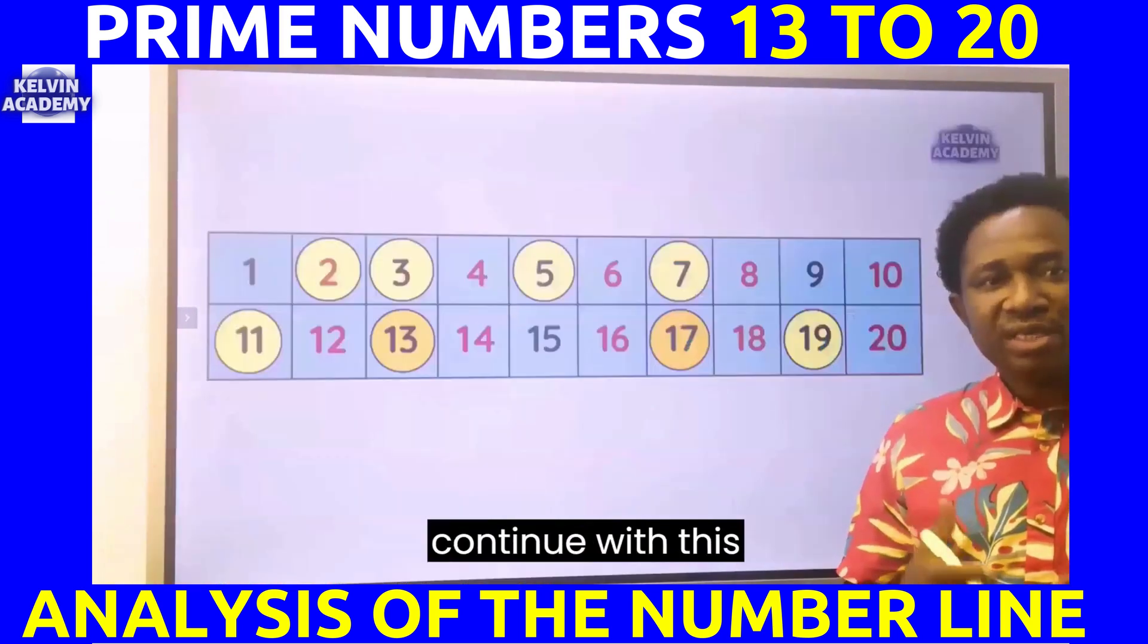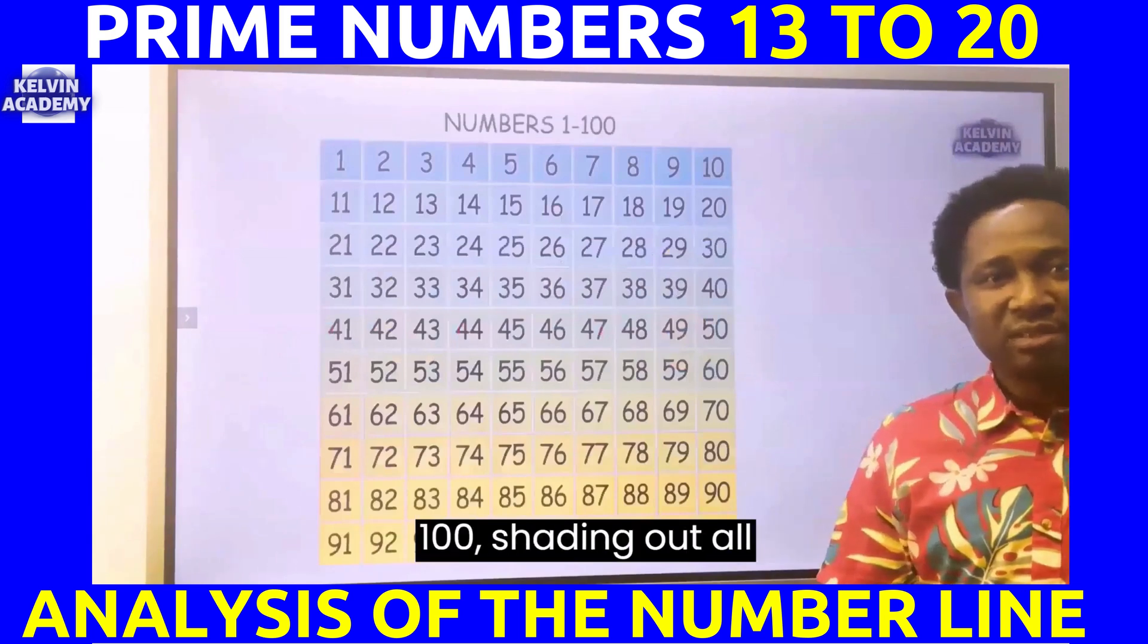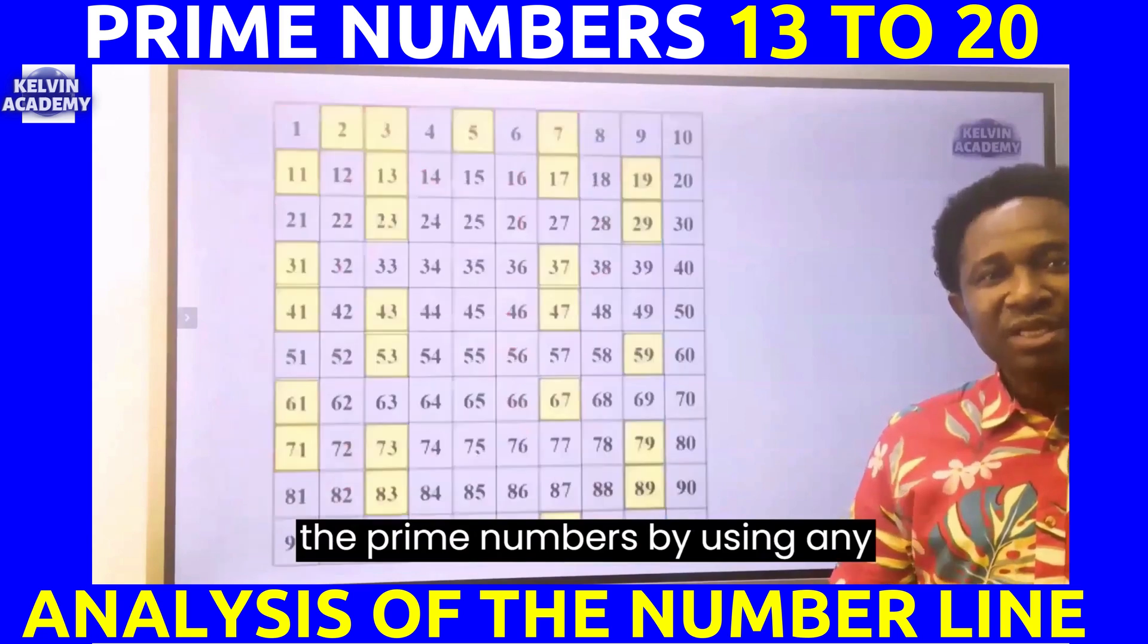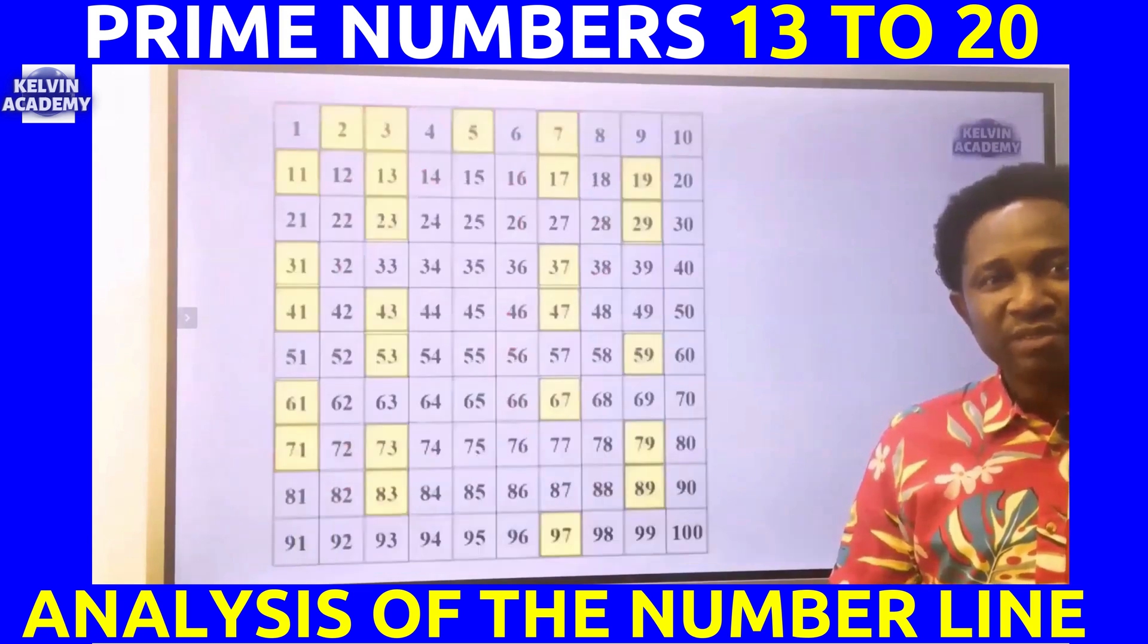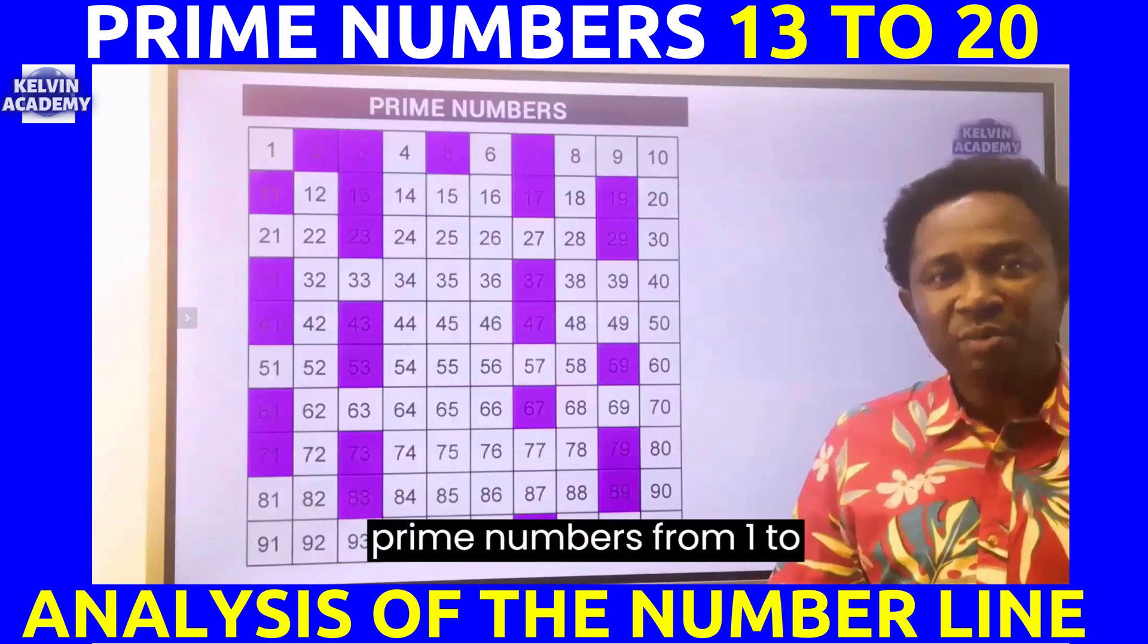You can continue with this identification from 1 to 100, shading out all the prime numbers by using any color pencil of your choice. The shaded squares here are all prime numbers from 1 to 100.